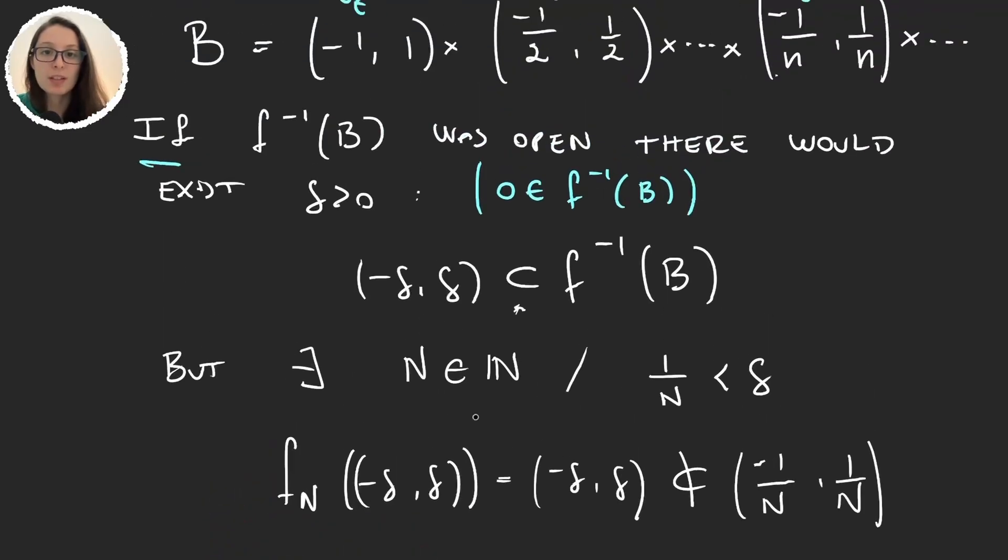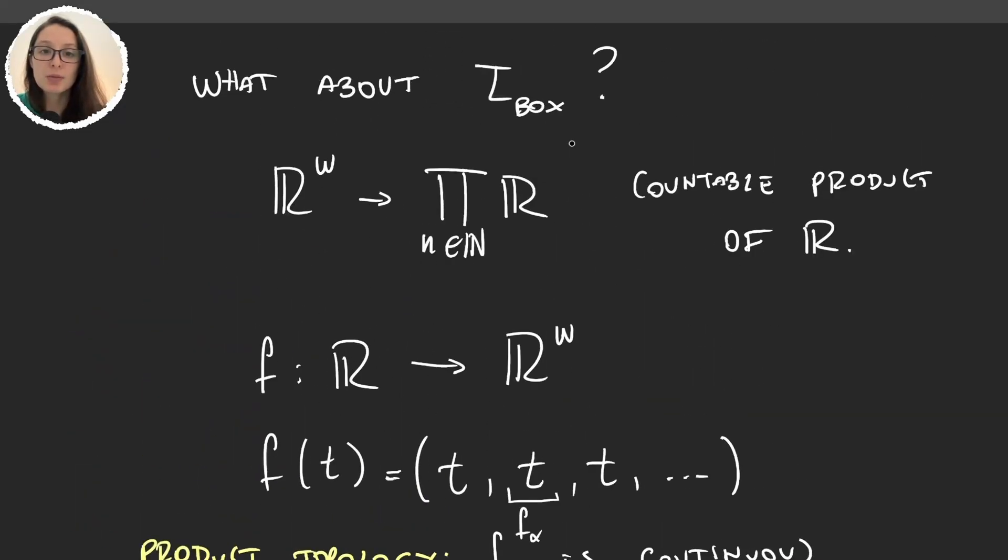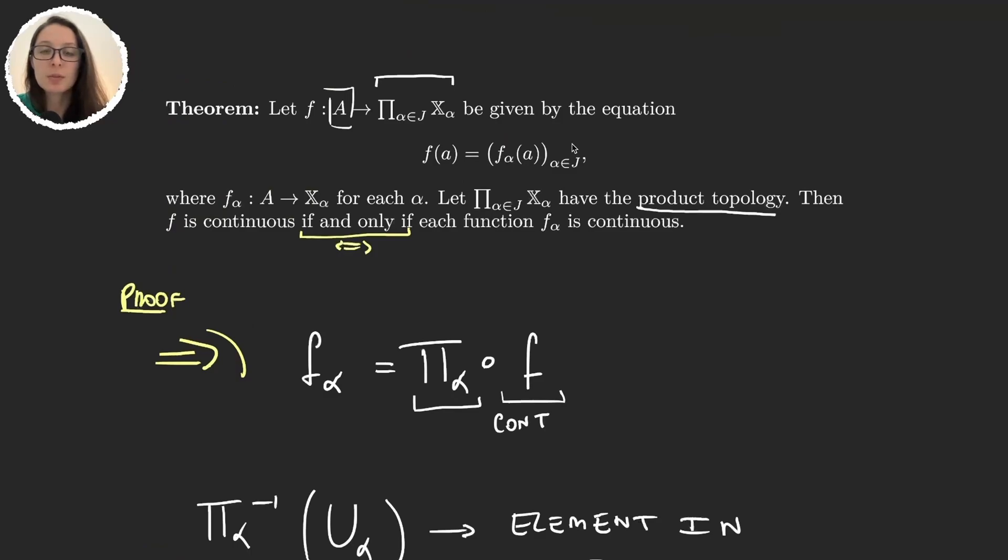And then we know that this set cannot be open, and we have that in the box topology, this function f, the identity function, is not continuous, even if each of its components is continuous. So it doesn't satisfy this theorem. And this is the reason why we usually work with the product topology instead of the box topology.